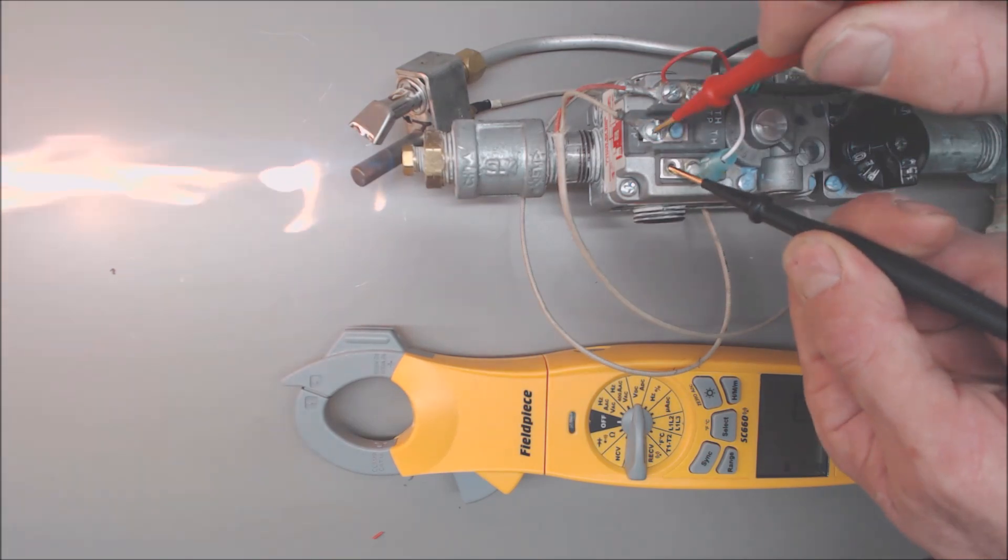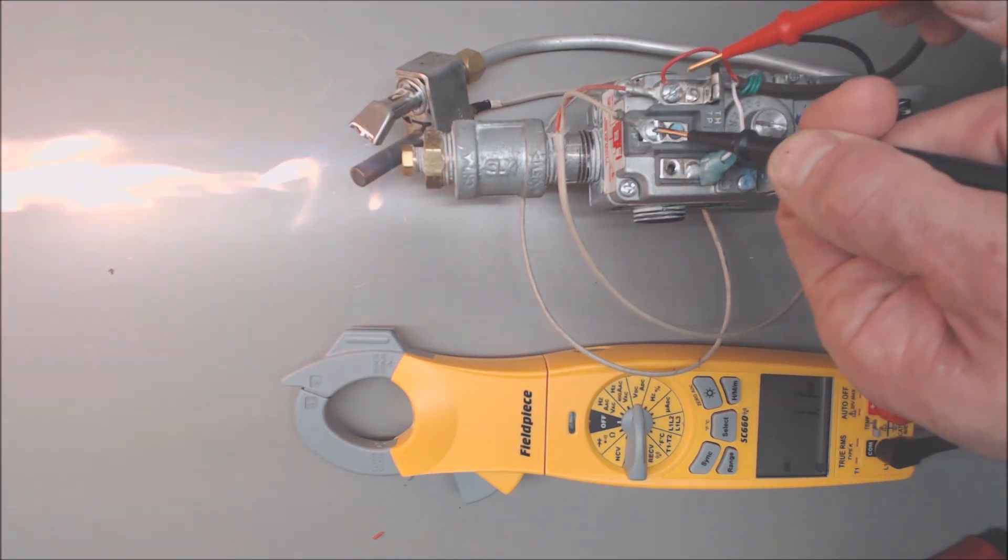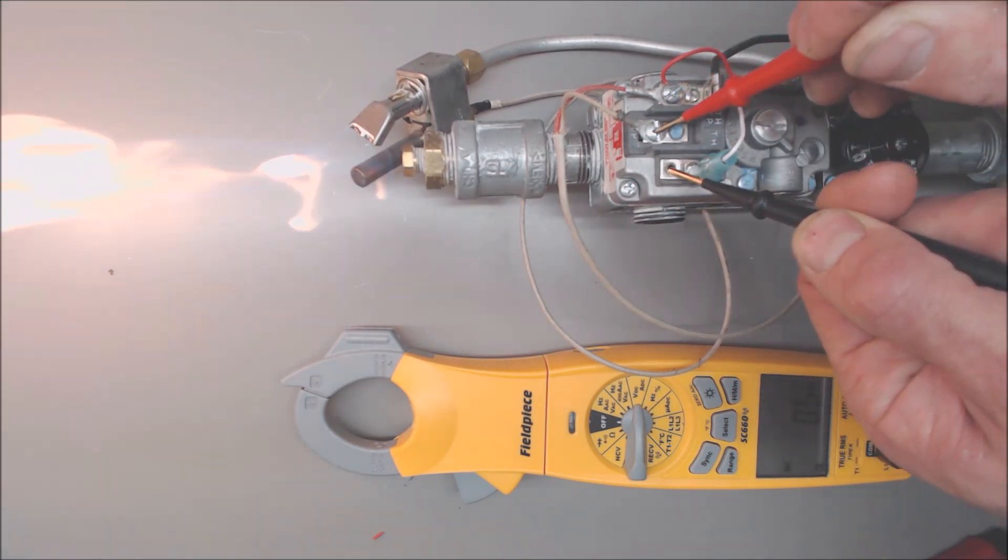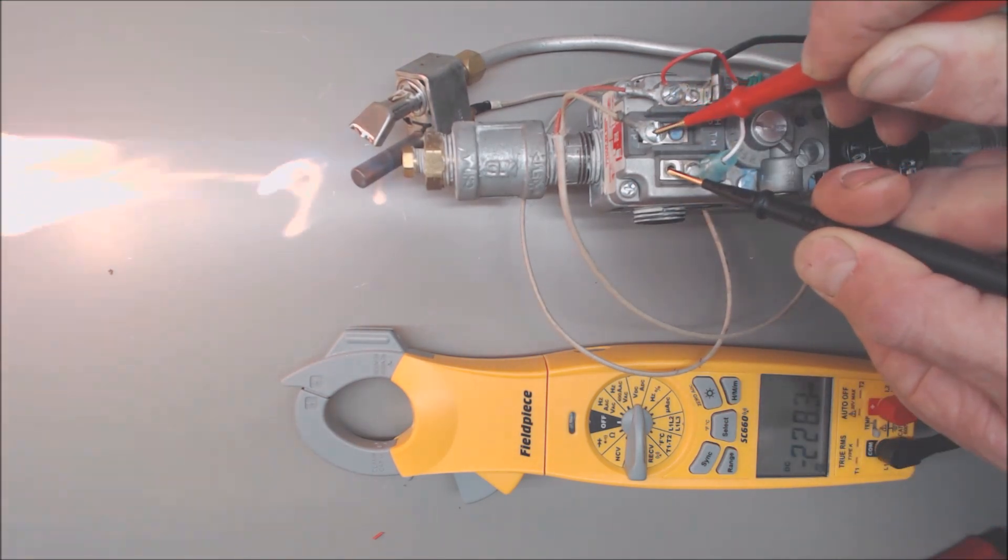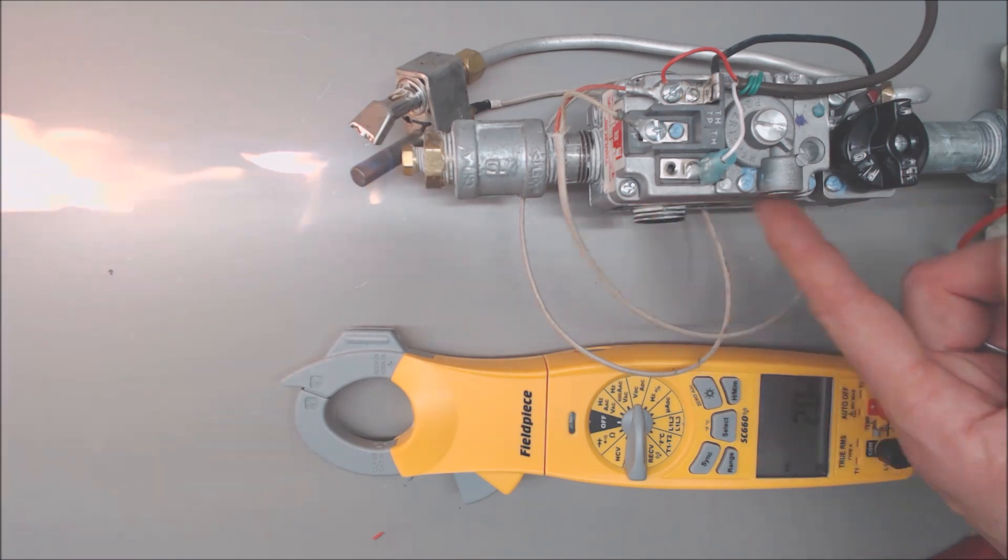If we check out over on this side, it'll be lower than whatever that is, so we're reading 222 millivolts. You can see that there's a significant voltage drop from where the pilot valve is wired into to where we have the main gas valve wired at. Presently we're reading 230 millivolts roughly, and you see that is actually enough to open up that gas valve.